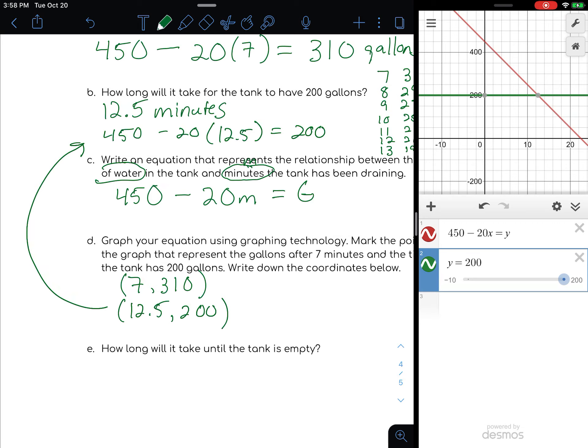So 12.5, 200 will be our total. That solution works because if I have 450 minus 20 times 12.5, that's going to give me that 200 gallons. That's essentially a way of finding the solution.